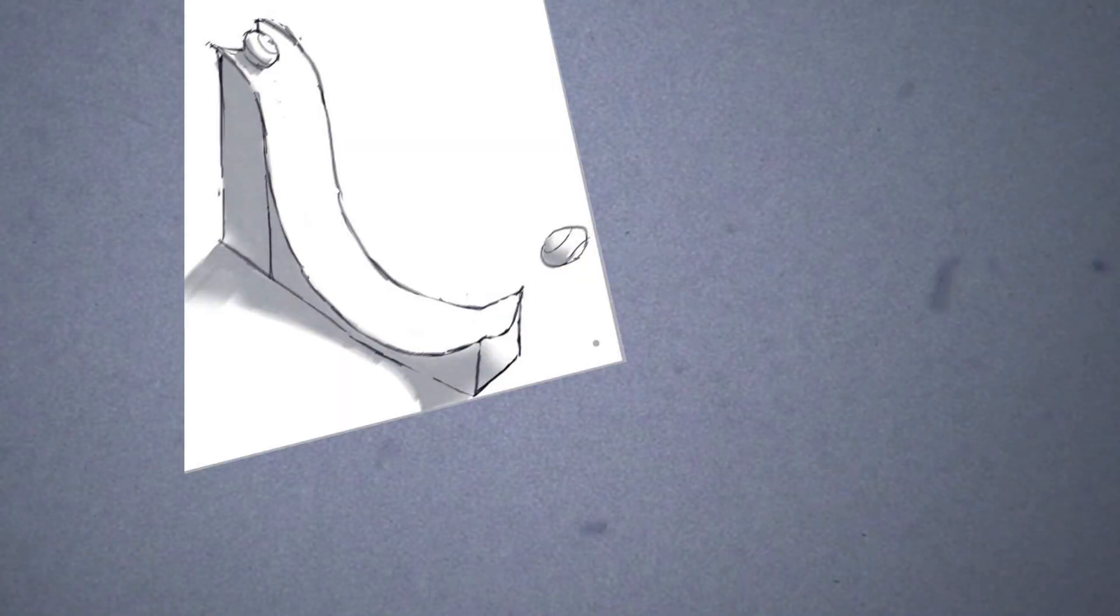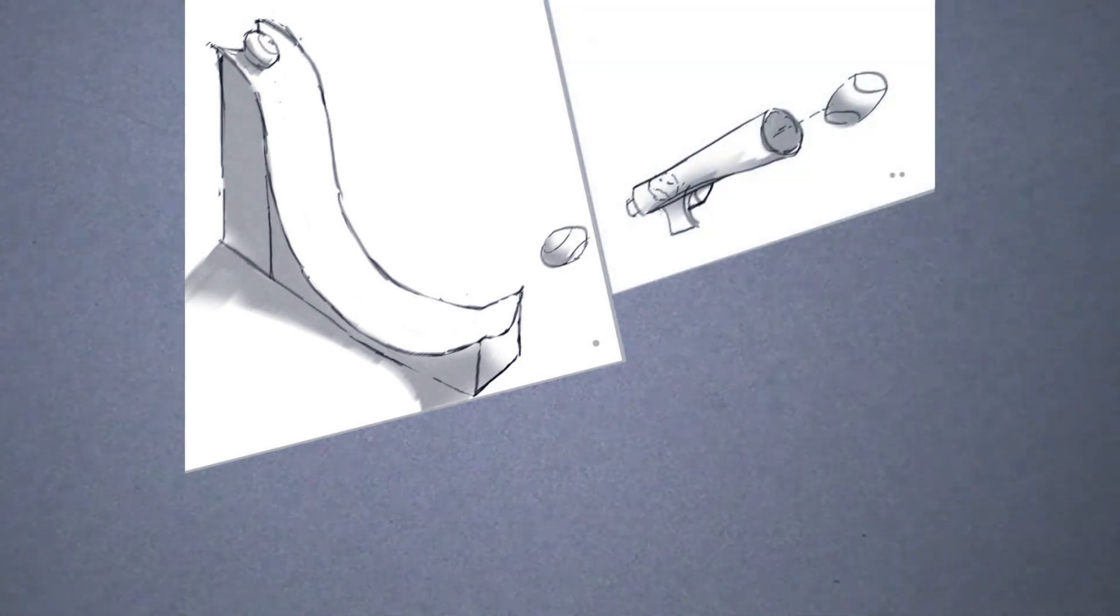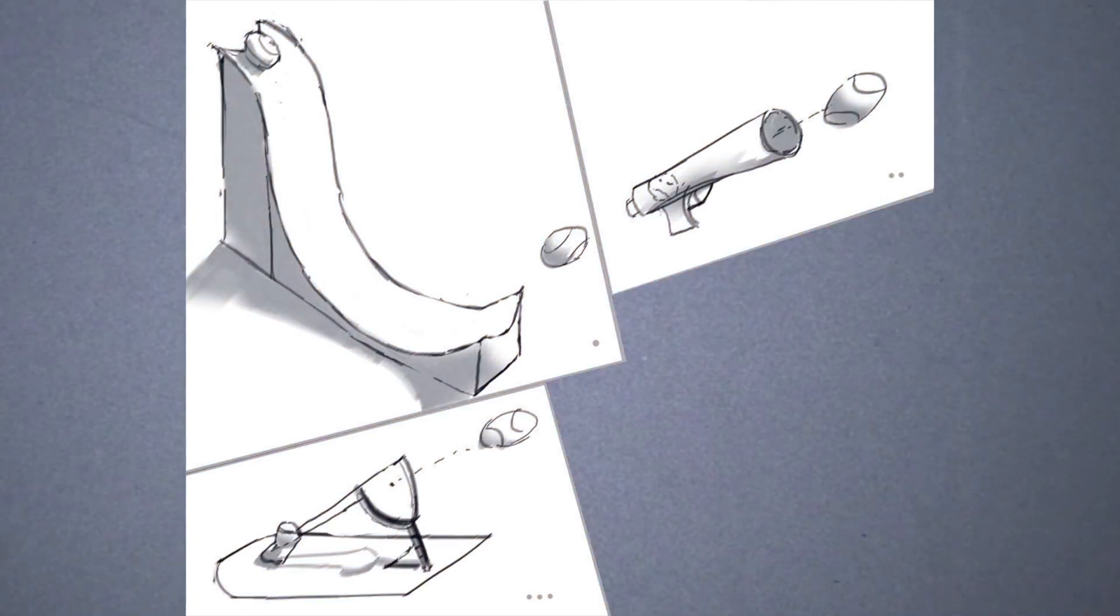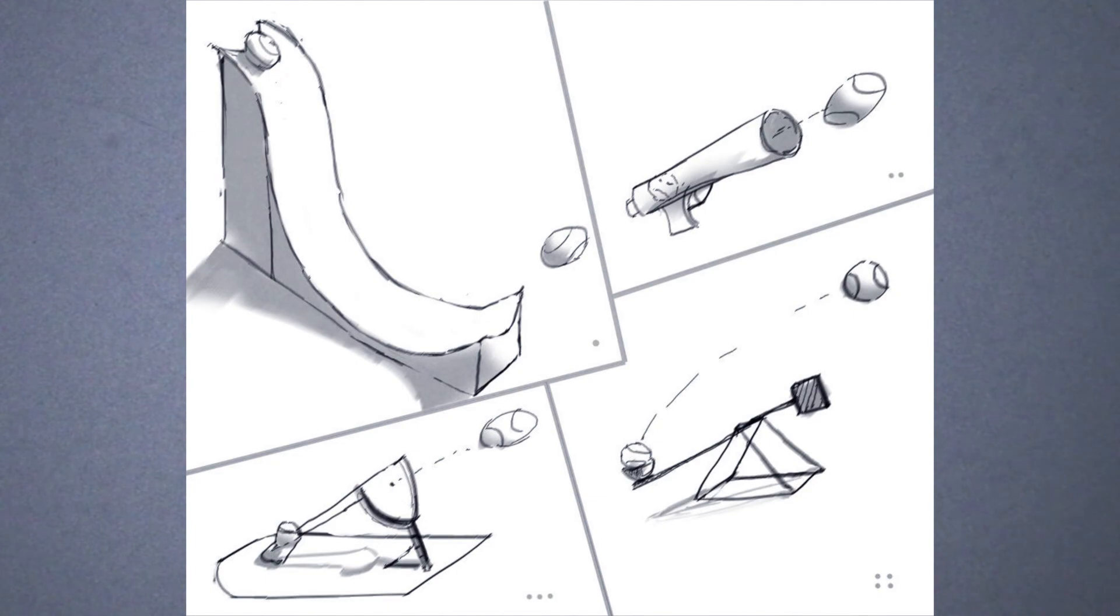First was a ramp which would be fast firing and accurate using only gravity. Second was a mortar-like device using medical tubing or a spring to launch the ball. Third was a classic slingshot design using medical tubing as the energy mechanism. And finally, a trebuchet-type device with only physics and gravity to help it along.